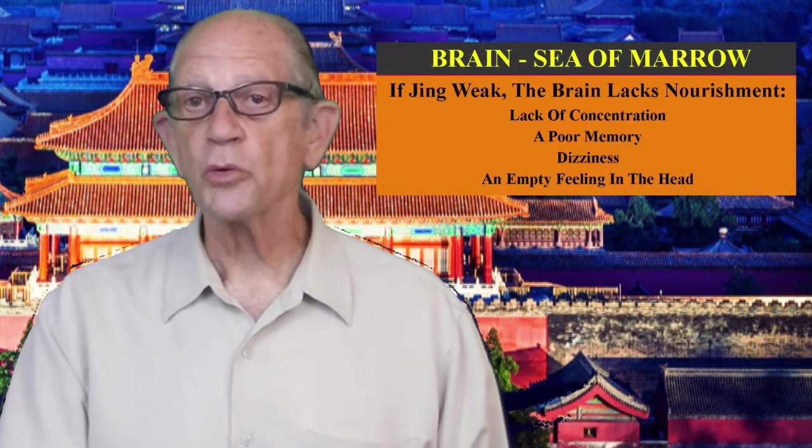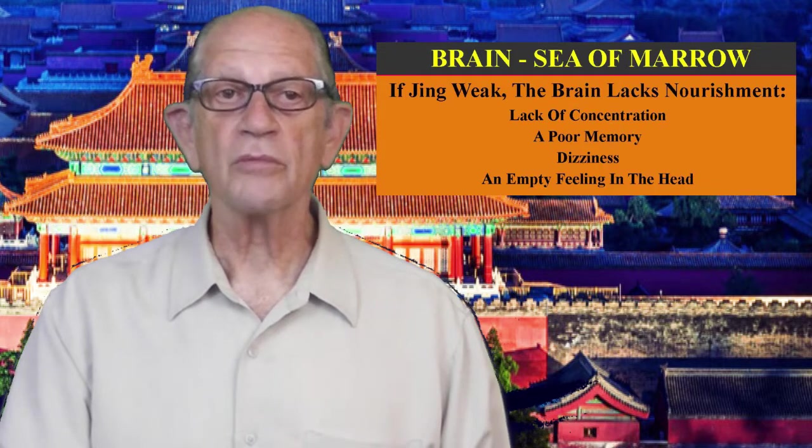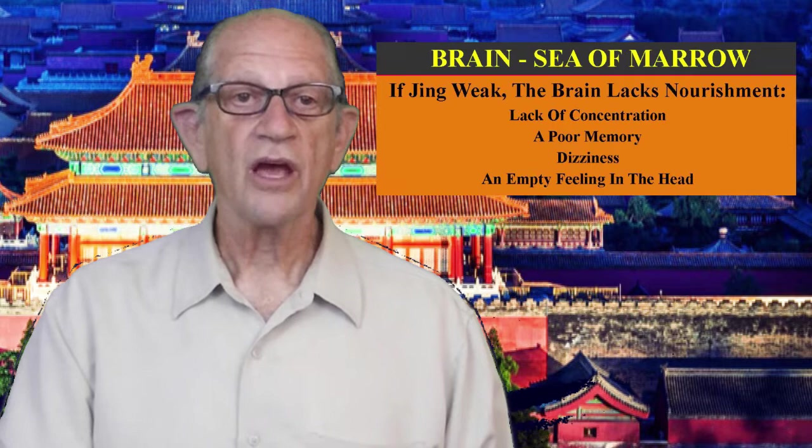Jing produces marrow. The concept of marrow in Chinese medicine is different from that in Western medicine and is not simply bone marrow. Marrow in turn produces bone marrow and fills the spinal cord and the brain. This marrow is the common matrix of the bone marrow, the spinal cord, and the brain, and has no equivalent in Western medicine. The brain is called the Sea of Marrow. If Jing is weak, the brain may lack nourishment and the patient may suffer from lack of concentration, poor memory, dizziness, and an empty feeling in the head. Jing is the basis of constitutional strength and resistance to external pathogenic factors. Wei Qi, or defensive Qi, which is primarily responsible for resistance to external pathogenic factors, draws its strength and has its root in Kidney Jing. It is said that if Jing is properly stored and not dissipated, no febrile disease can be contracted.